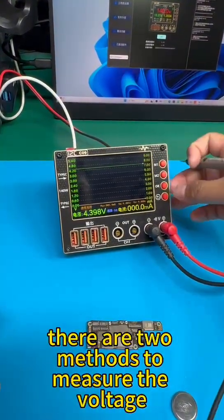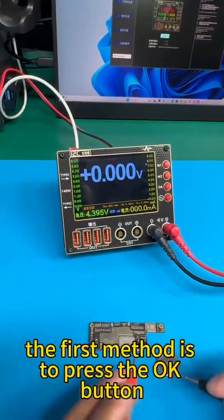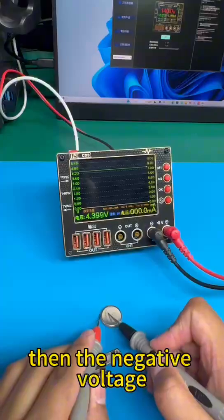There are two methods to measure the voltage. The first method is to press the OK button to test the positive voltage first, then the negative voltage.